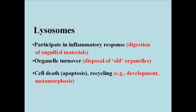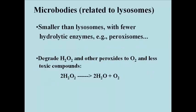Apoptosis happens, for example, during metamorphosis — when a tadpole becomes a frog, or a caterpillar becomes a butterfly — or in differentiation in animals in which old tissues are reabsorbed and remodeled into new ones.